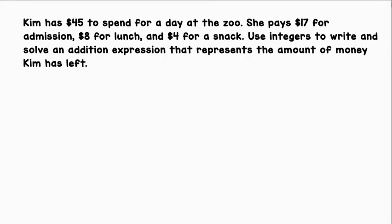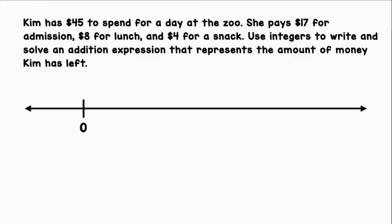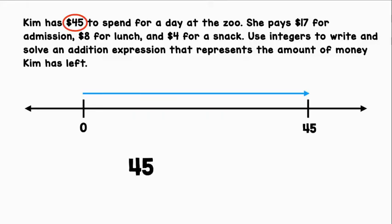Kim has $45 to spend for a day at the zoo. She pays $17 for admission, $8 for lunch, and $4 for a snack. Use integers to write and solve an addition expression that represents the amount of money Kim has left. Let's represent this situation with a horizontal number line. First, she starts with $45. We can represent this with $45.